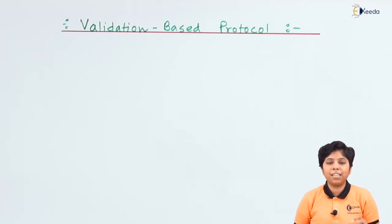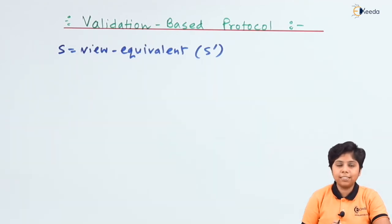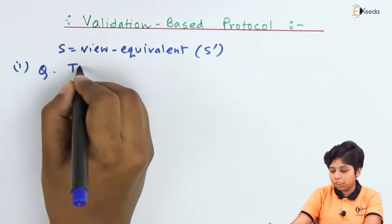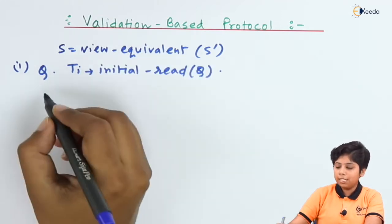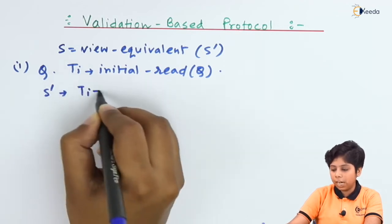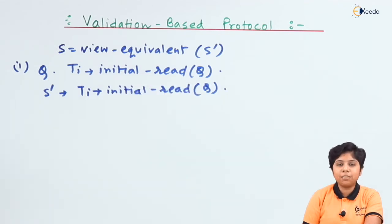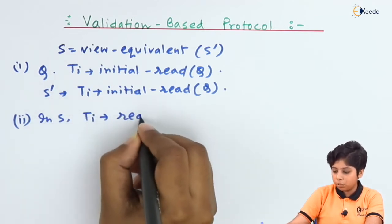Schedule S is view equivalent to serial schedule S-dash if the following conditions are satisfied. First, if any data item Q on schedule S has transaction Ti producing the initial read on Q, then S-dash must also have Ti producing the initial read on data item Q. That means the initial read on both schedules S and S-dash must be the same for each transaction.